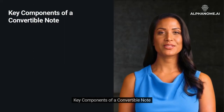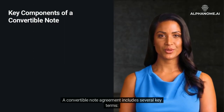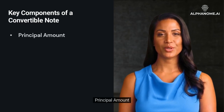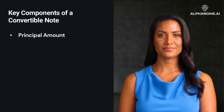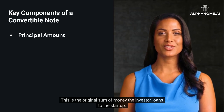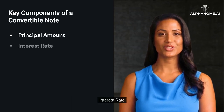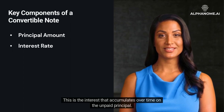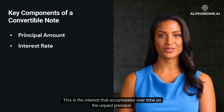Key components of a convertible note. A convertible note agreement includes several key terms. Principal amount: this is the original sum of money the investor loans to the startup. Interest rate: this is the interest that accumulates over time on the unpaid principal.